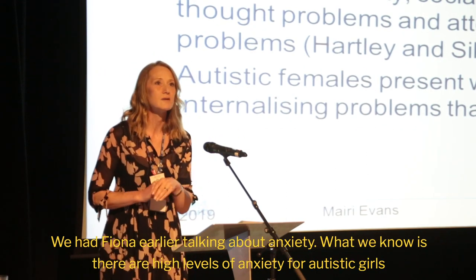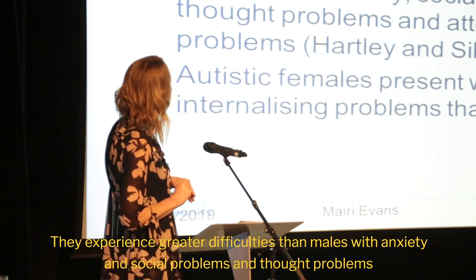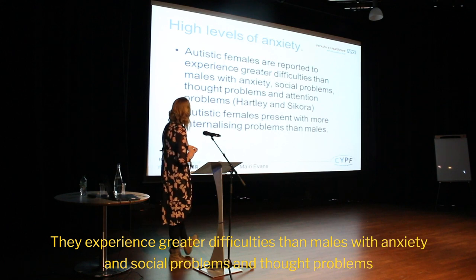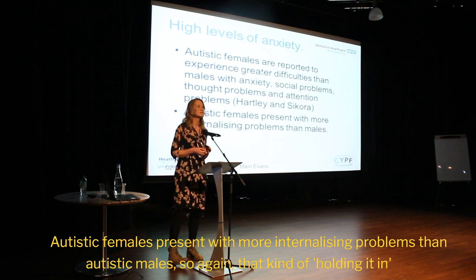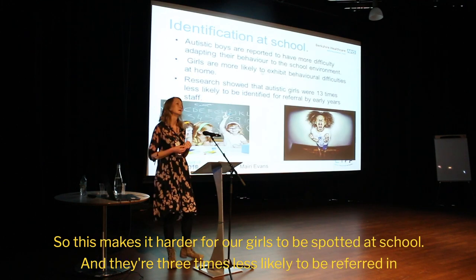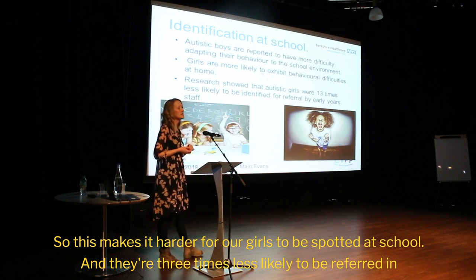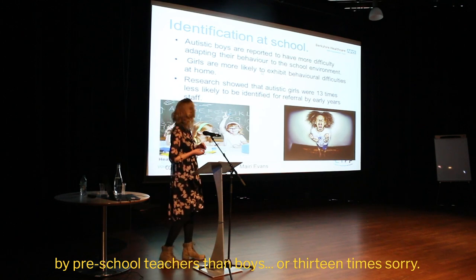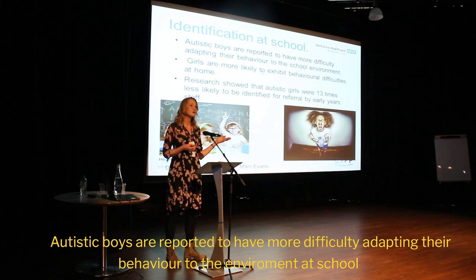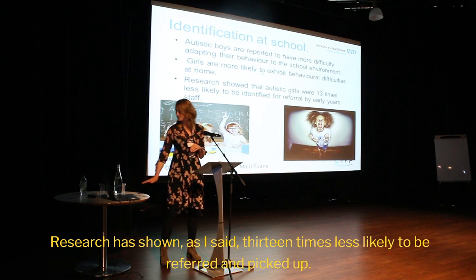There are high levels of anxiety for Autistic girls. They experience greater difficulties than males with anxiety, social problems, and thought problems. Autistic females present with more internalising problems than Autistic males — that kind of holding it in. This makes it harder for girls to be spotted at school. They're 13 times less likely to be referred in by preschool teachers than boys. Autistic boys are reported to have more difficulty adapting their behaviour to the environment at school.